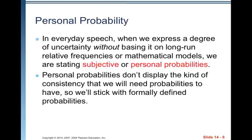In everyday speech, when we express a degree of uncertainty without basing it on long-run relative frequency or mathematical models, we're stating subjective or personal probabilities. For example, if someone's having a party this weekend, you might say there's about an 80% chance you're going to show up — not because you've tracked the relative frequency of times you showed up, but more of an internal feeling. Personal probabilities don't display the kind of consistency that we need probabilities to have, so we'll stick with formally defined probabilities.